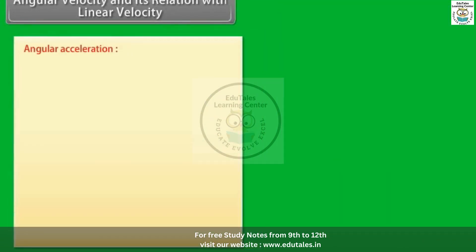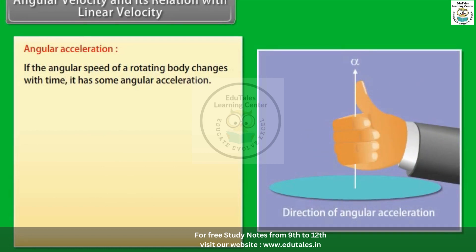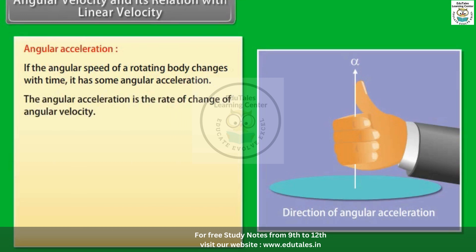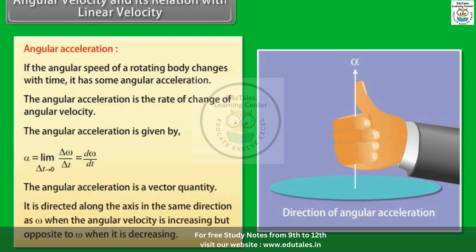If the angular speed of a rotating body changes with time, it has angular acceleration. Angular acceleration is the rate of change of angular velocity, given by α = lim(Δt→0) Δω/Δt = dω/dt. It is a vector quantity directed along the axis in the same direction as ω when angular velocity is increasing, and opposite to ω when it is decreasing.